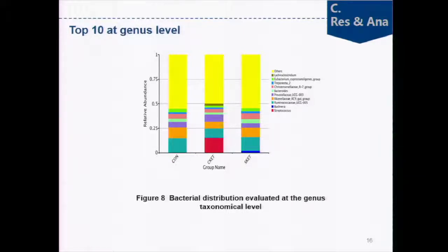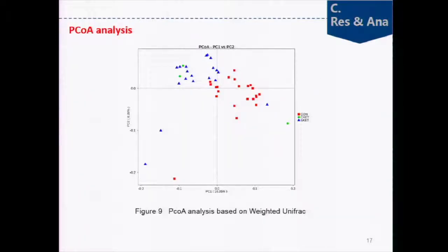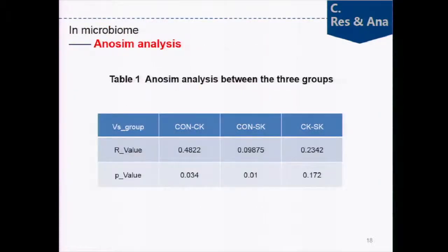Looking at the top 10 genera in each group: in the CON group, the top 10 consists of 8 genera. Based on CON, CK adds new genera including Streptococcus and others. In SK, Burkholderia genera are added. This is a PCoA analysis — different groups have different colors, with the red color representing CON. There were significant differences between CON and CK, and between CON and SK.